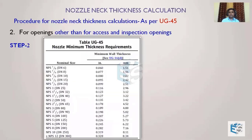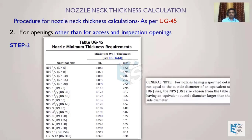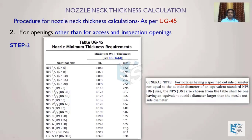Table UG45 gives nozzle minimum thickness required without corrosion allowance — we must add corrosion allowance to it. For example, for DN200, the table gives 7.16 mm; adding 1 mm corrosion allowance gives T_B3 = 8.16 mm. People often get confused and directly use the table value — remember: T_B3 is table value plus corrosion allowance. If there is no corrosion allowance, then the table value alone is used.